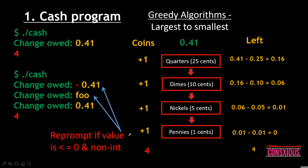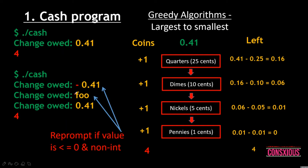This is the Cash program — we key in dot-slash cache. The program will prompt the user to input some value, which will be a decimal number representing a dollar amount. The program will run through a sequence and return how many coins the user will receive. If you key in a negative value or a non-integer, the program will re-prompt the user.